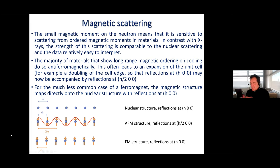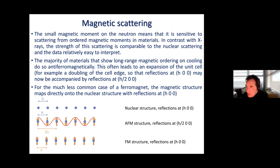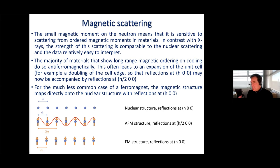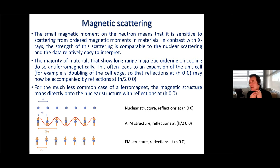In the antiferromagnetic case we start to see magnetic reflections not just at h00 but at h/2 00, with the Miller index being the reciprocal of the repeat distance. In the much rarer case of ferromagnets — where magnetic moments are parallel to their neighbors — the nuclear and magnetic repeat distances are the same, so no additional reflections appear. These are the materials we notice because they have an overall magnetic polarization and exert forces on other magnetically susceptible materials — fridge magnets, for example.